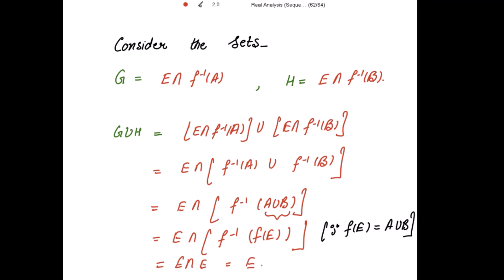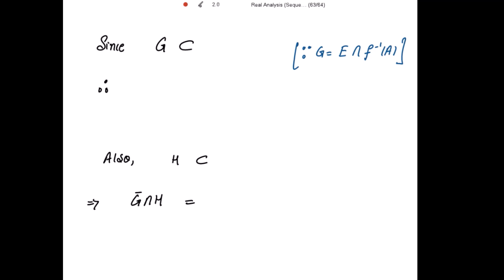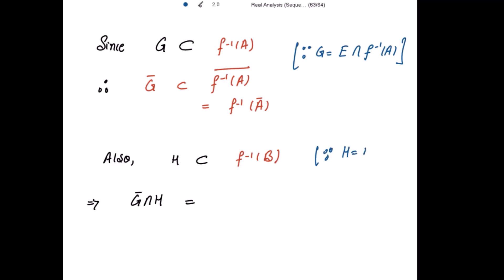So E equals G∪H — please remember this. Now, since G = E ∩ F⁻¹(A), we have that G is a subset of F⁻¹(A). Taking closure on both sides, G-closure is a subset of the closure of F⁻¹(A). Similarly, H = E ∩ F⁻¹(B), so H is a subset of F⁻¹(B).